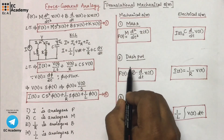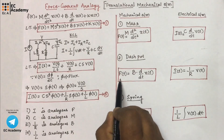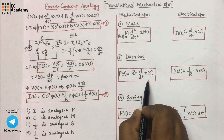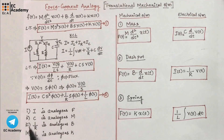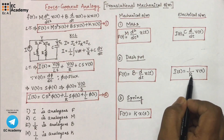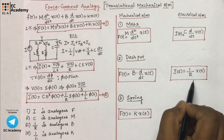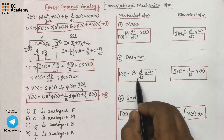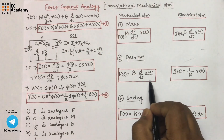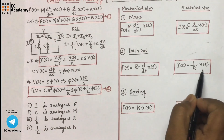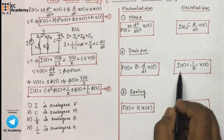Similarly, for dashpot, we have the differential equation F(t) = B·dx/dt. Here, reciprocal of resistor is analogous to dashpot, so we replace B by 1/R in the analogous electrical system. Therefore, F(t) = B·dx/dt can be written as I(t) = (1/R)·V(t) in the electrical system.